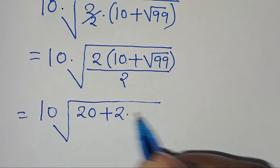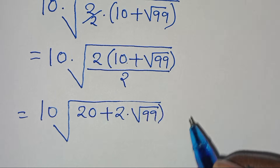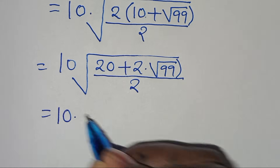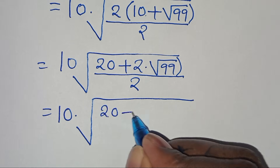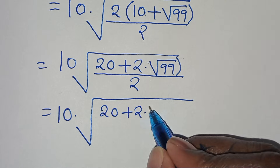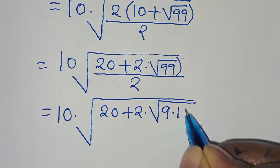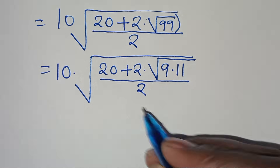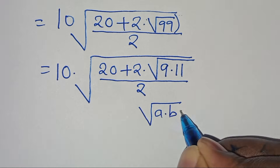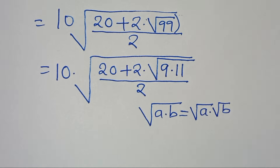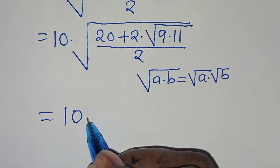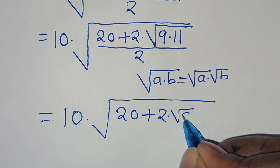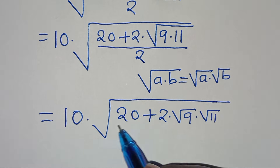Opening the parentheses, 2 times 10 is 20, plus 2 multiplied by square root of 99, all divided by 2. We can express square root of 99 as square root of 9 times 11. Applying the product property, this gives us 10 multiplied by the square root of 20 plus 2 times square root of 9 times square root of 11, all divided by 2.